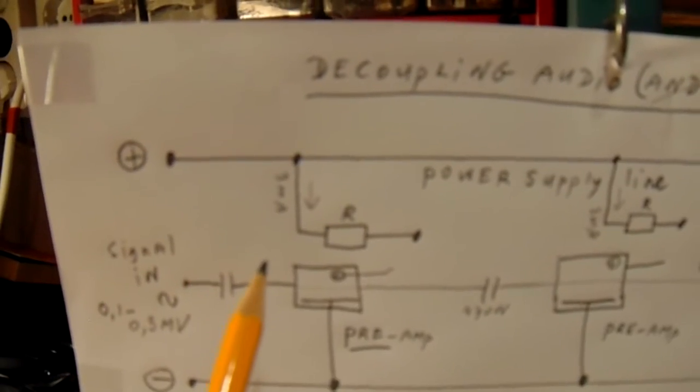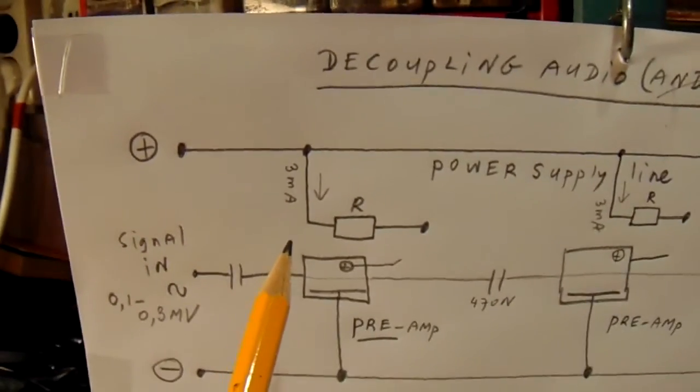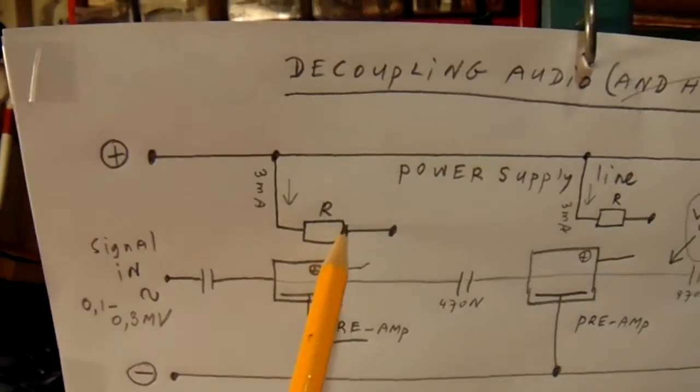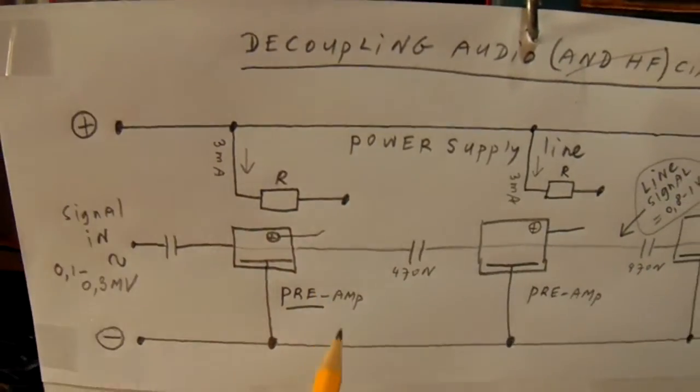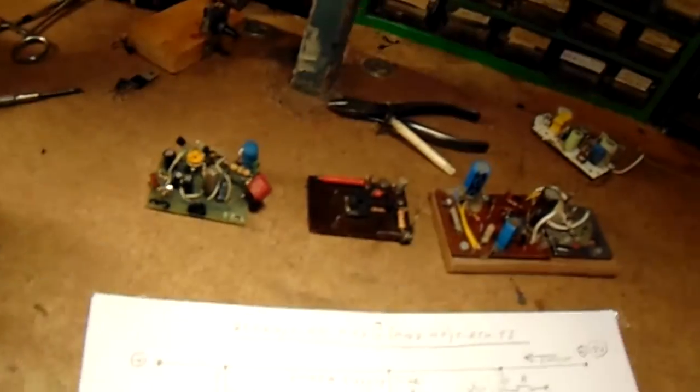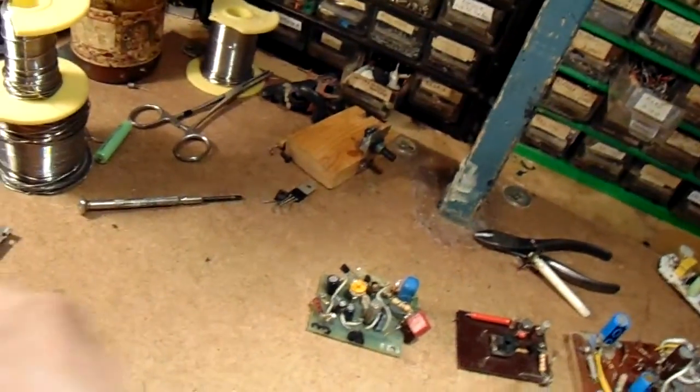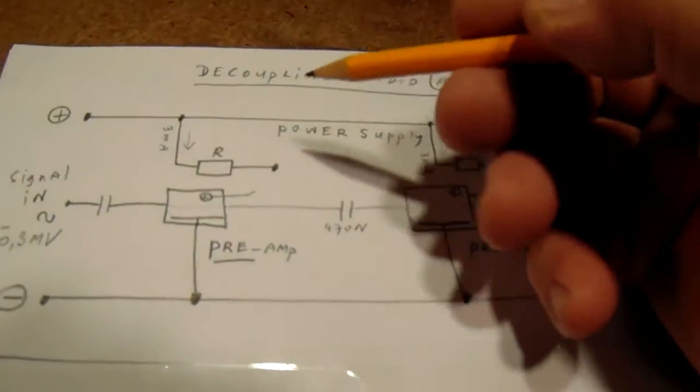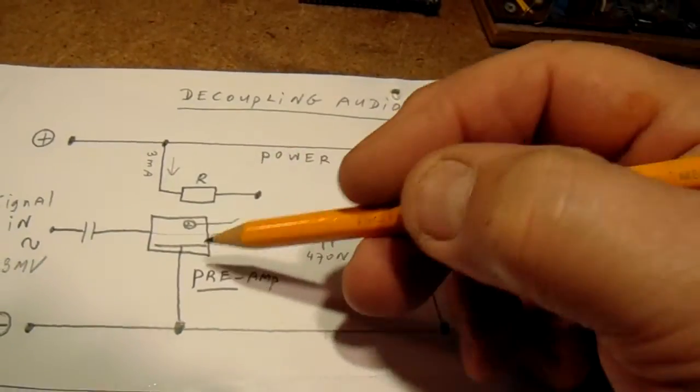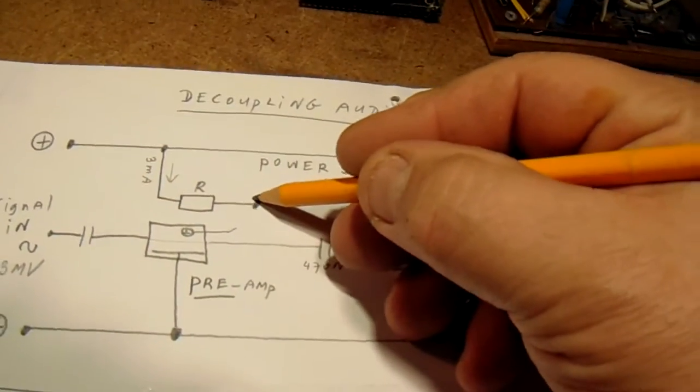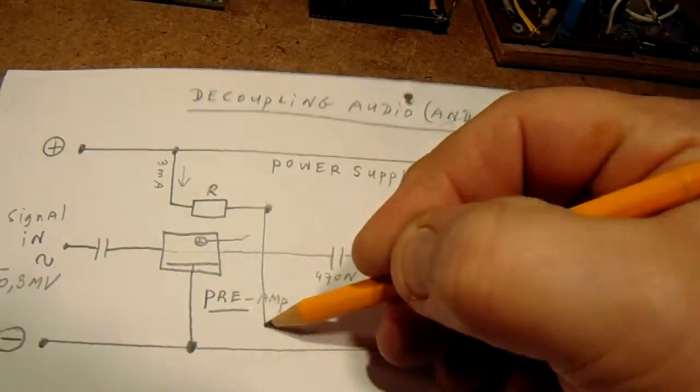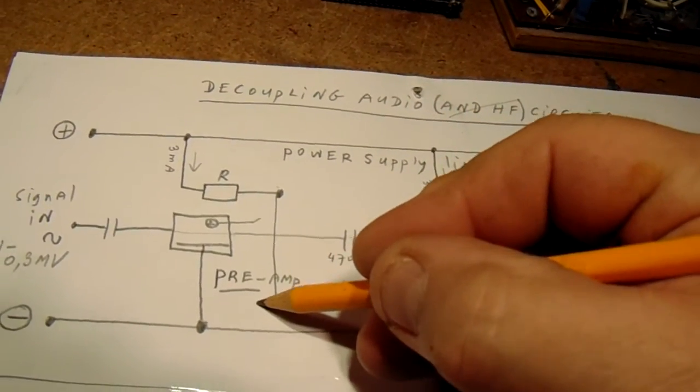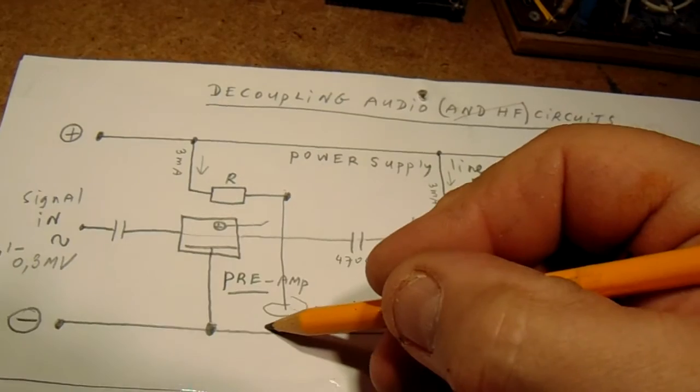And this is a standard way to make a decoupling unit: a resistor here and here a capacitor to ground. I want to demonstrate that now. Here we have the resistor from the pre-amplifier, and here we connect the capacitor from say 100 microfarad to ground.